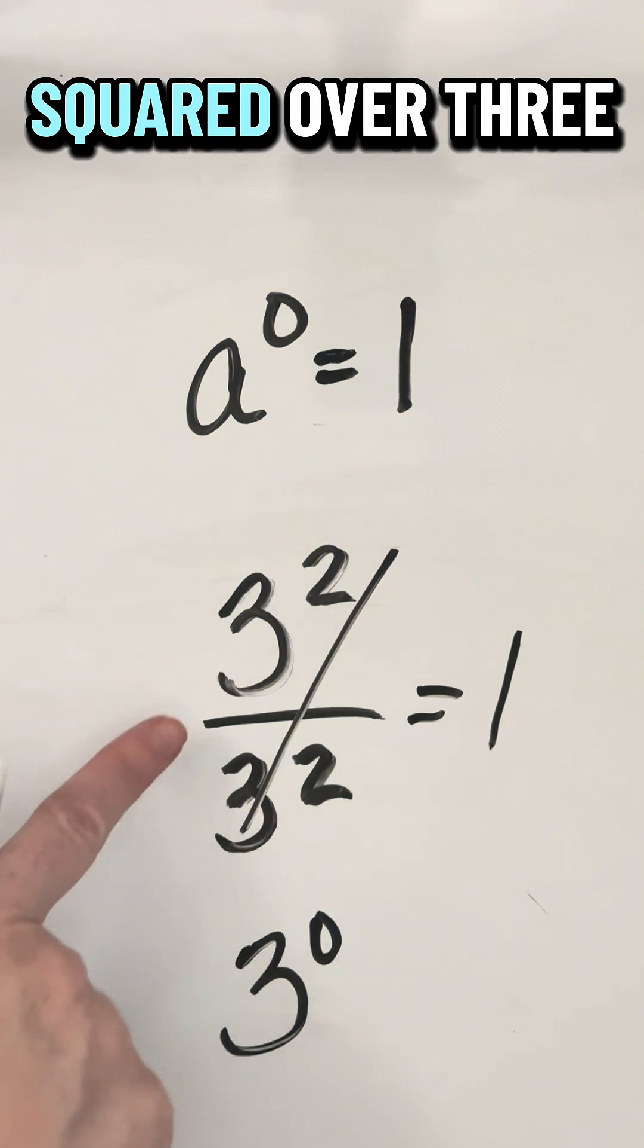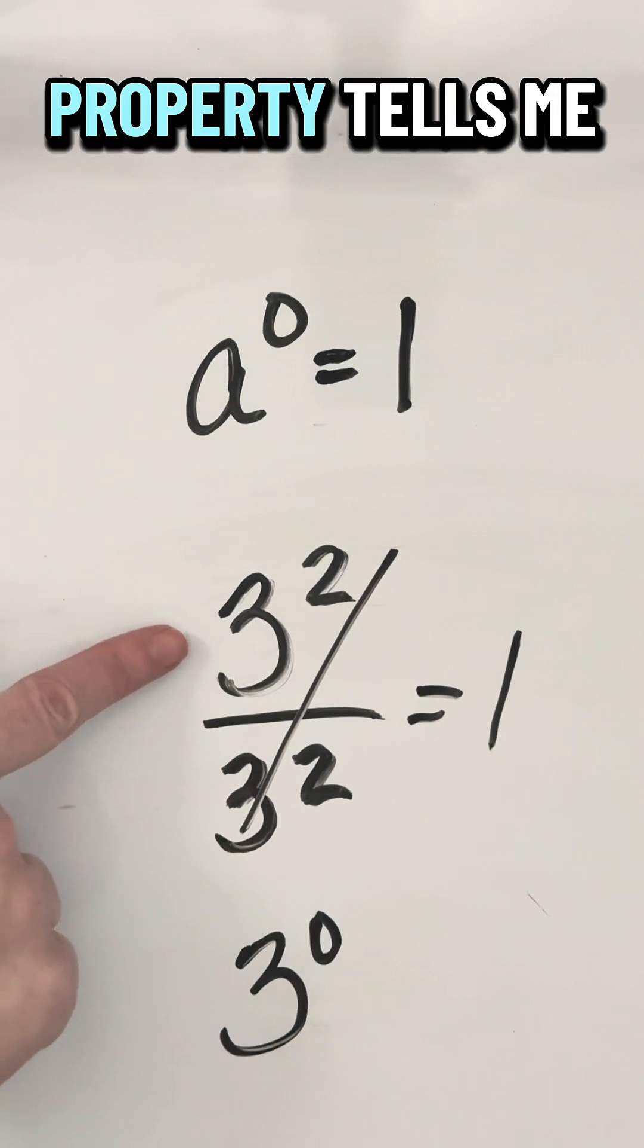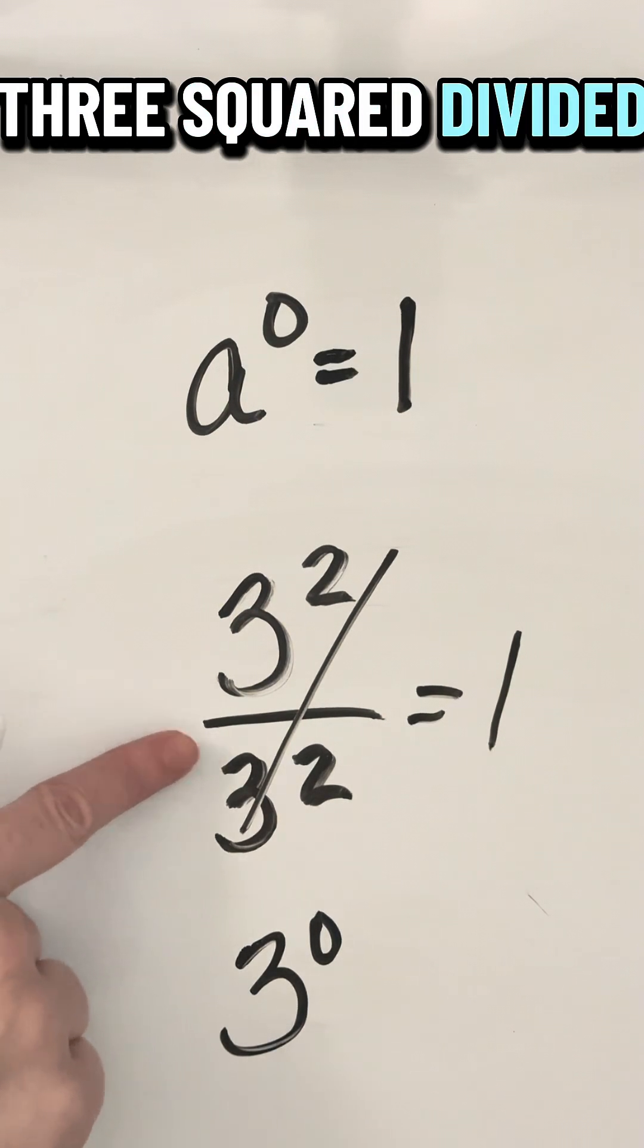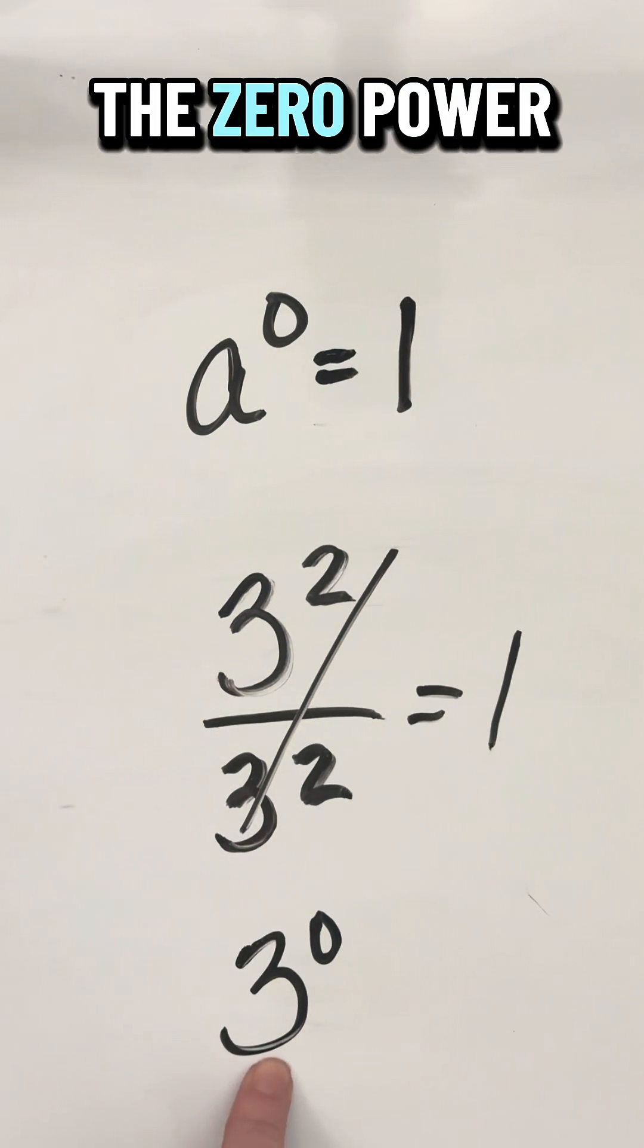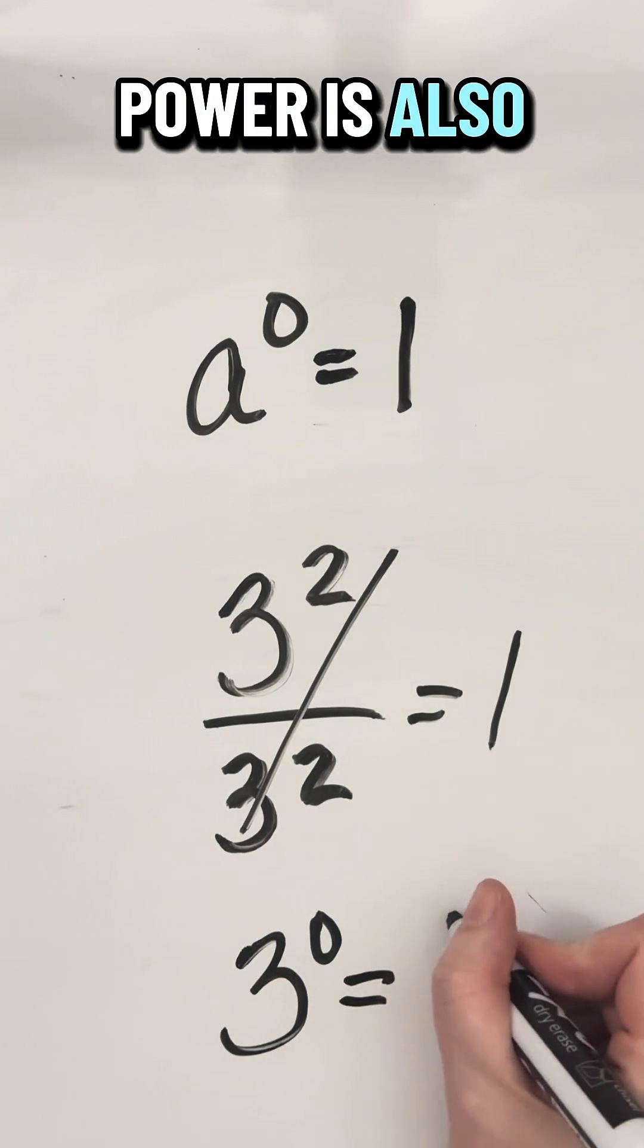So if three squared over three squared is equal to one, and my exponent property tells me three squared divided by three squared equals three to the zero power, that means three to the zero power is also one.